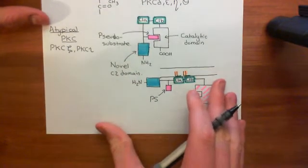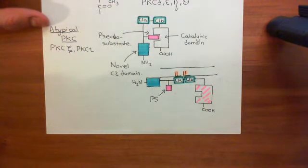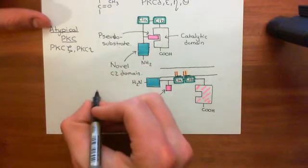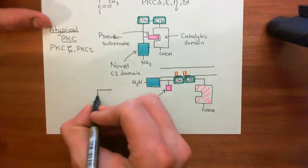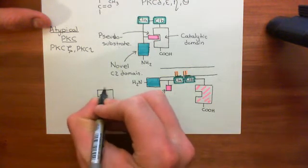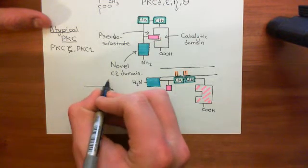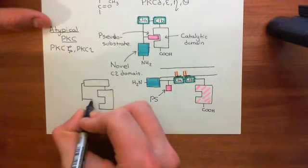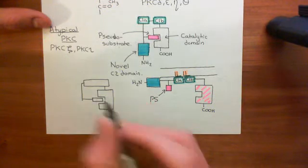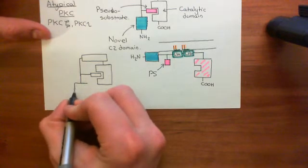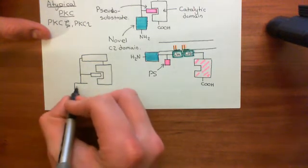Their structure contains an atypical C1 domain and nothing that bears any resemblance to a C2 domain. Here is the catalytic domain, then the atypical C1 domain. Then the pseudosubstrate comes in and blocks the active site of the catalytic domain. And then they have an unusual domain involved in their activation, known as the PBI domain, followed by the amino-terminus.